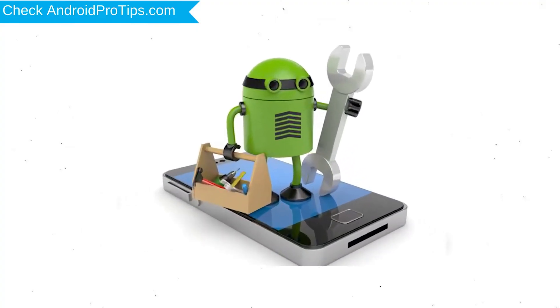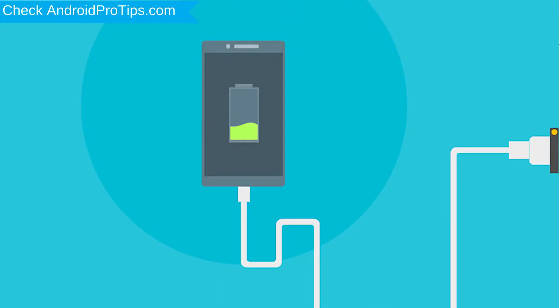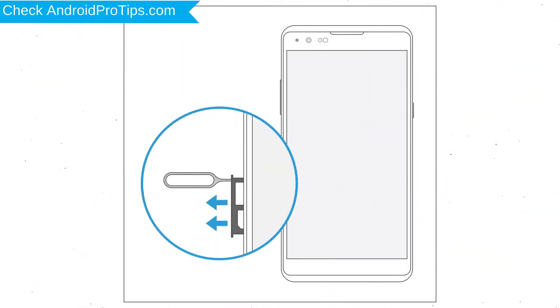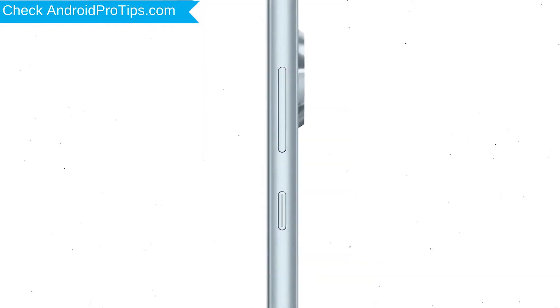Before you reset your mobile, your mobile battery must be above 50%. Remove SD cards and SIMs. Back up your Android mobile data if possible. Power off your mobile by holding the power button.